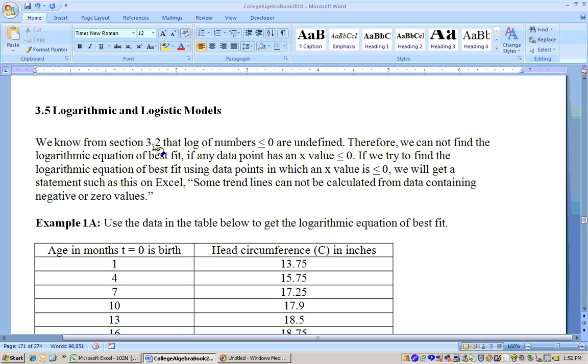Okay, this is on logarithmic and logistic models. We know from section 3.3 that log of numbers less than or equal to 0 are undefined. If you take the log or natural log or log any base of 0 or negative numbers, they're undefined. That's why we have vertical asymptotes at x equals 0 for logs.